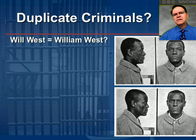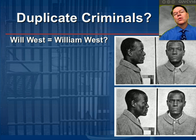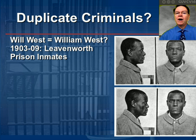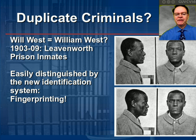Returning to the two criminals identified at the top of the program — how were they distinguished from one another? The criminal justice system recognized that anthropometry was not going to work in this or other situations for a variety of reasons. While these gentlemen were inmates, they were ultimately distinguished by a new identification system: fingerprinting. That's how we can tell them apart.